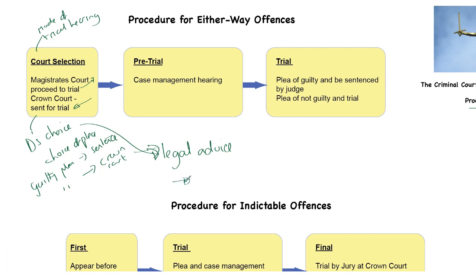Whilst making that choice, the defendant is entitled to something called advanced disclosure, which means they're entitled to see the evidence against them. Having decided, they then go to a case management hearing, where the date is planned, what evidence is required, what witnesses will be needed - all the general administration of the case happens pre-trial. Then we end up in trial. If it's the magistrates' court and the defendant agrees, they will generally proceed straight to trial. If it's sent to the crown court, there will need to be a case management hearing because the crown court sits less frequently, is busier, and listens to longer cases, so the planning has to be far more careful.